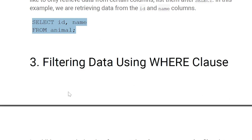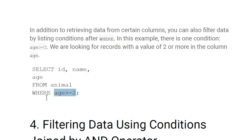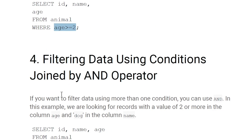Filtering data using the WHERE clause: after WHERE you give the condition by which you want to filter the result. For example, selecting id, name, and age from the animal table where the entries in the age column are greater than or equal to 2. You can also give multiple conditions.